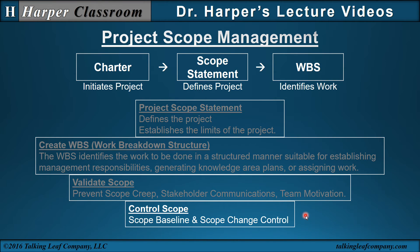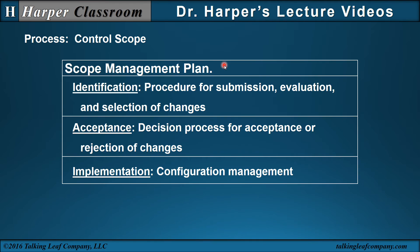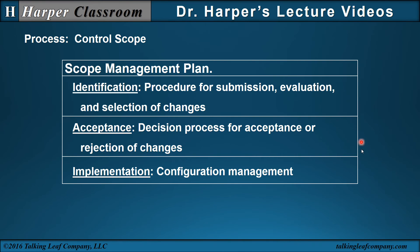Let's look at control scope. Control scope in the scope management plan includes identification, acceptance, and implementation. Identification covers the procedure for submission, evaluation, and selection of changes, coordinating with the integrated change control. Acceptance covers the decision process for acceptance or rejection of changes, again coordinating with integrated change control. Implementation includes configuration management — change management: did the change happen? And configuration management: if the change did happen, did it cause problems elsewhere? All of these are coordinated with the integrated change control.